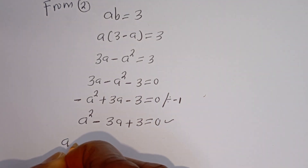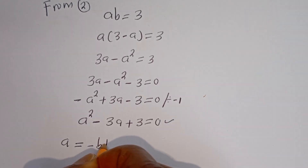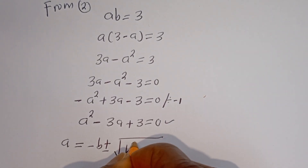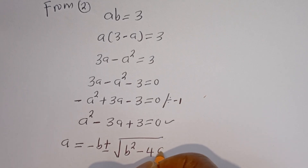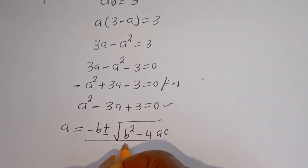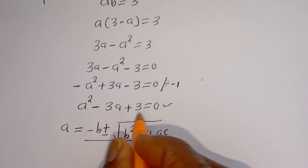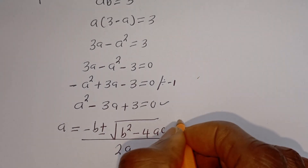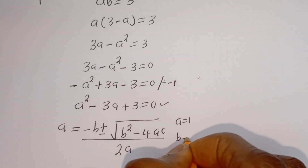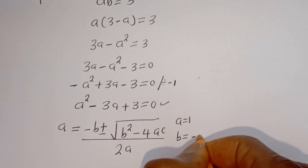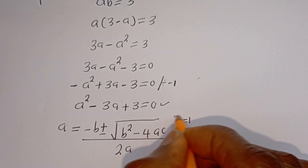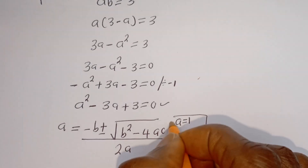Let's solve this using the quadratic general formula: A equals negative B plus or minus square root of B squared minus 4AC, all over 2A. From this equation, a is equal to 1, b is equal to minus 3, and c is equal to 3.